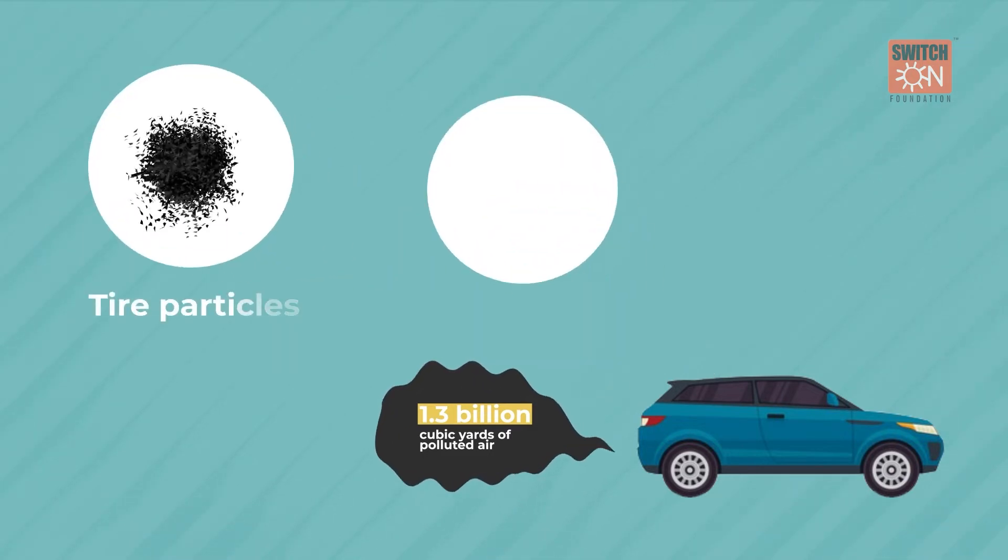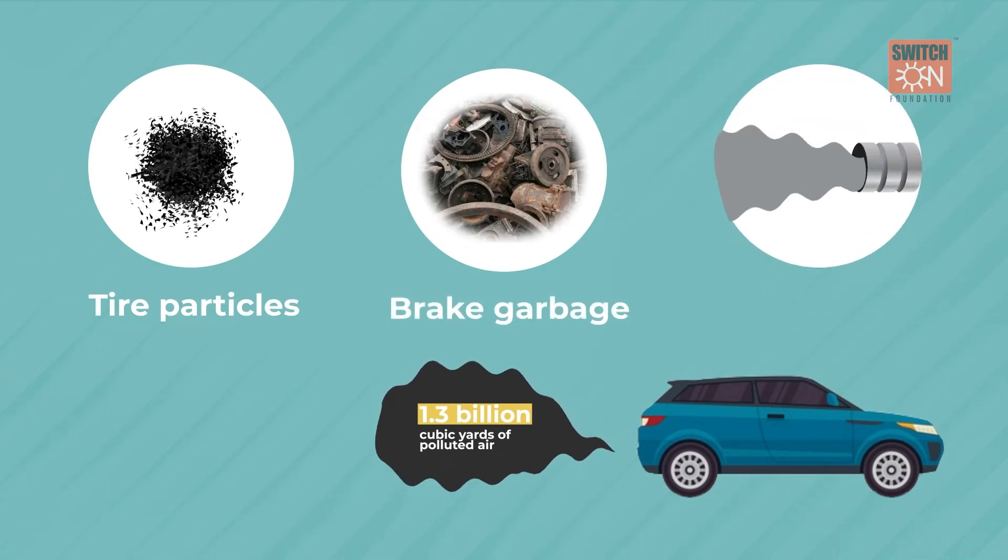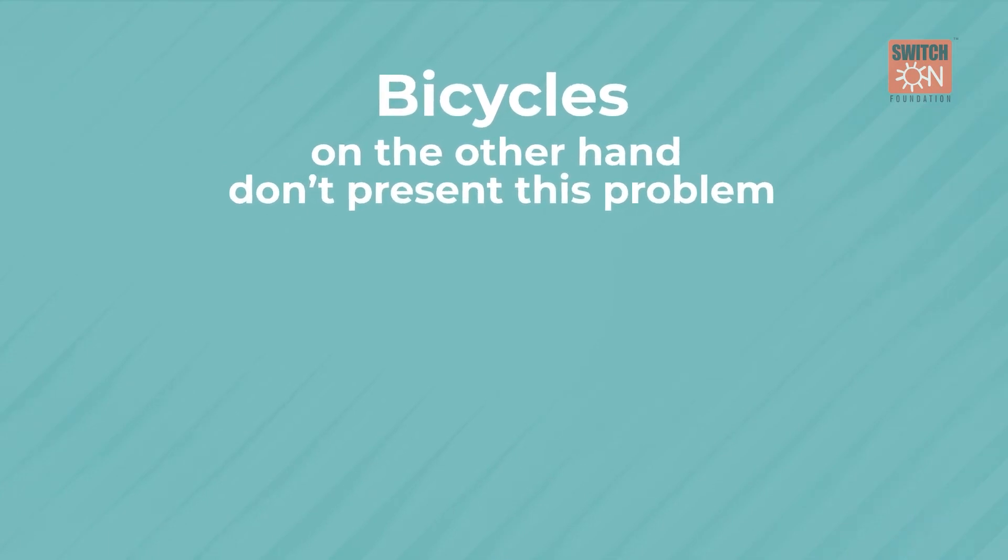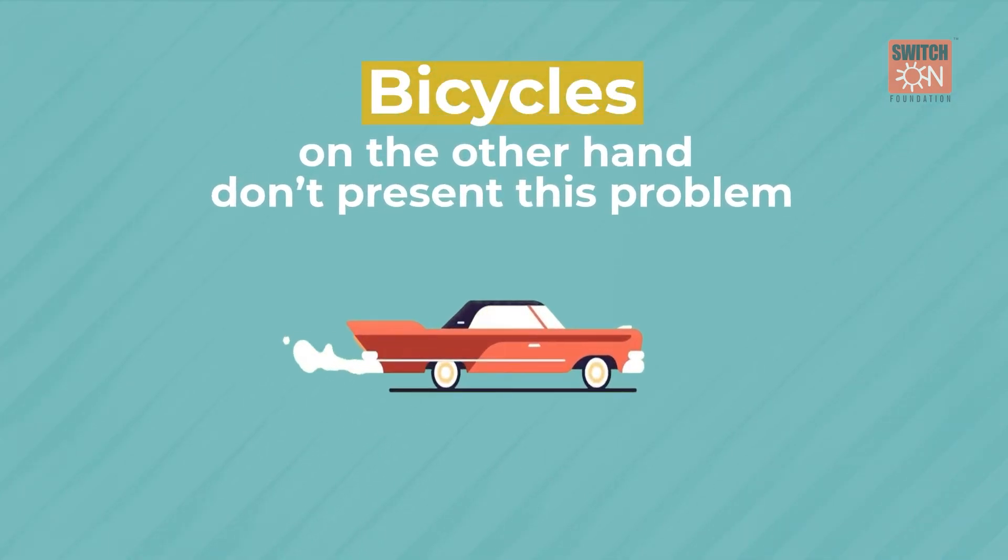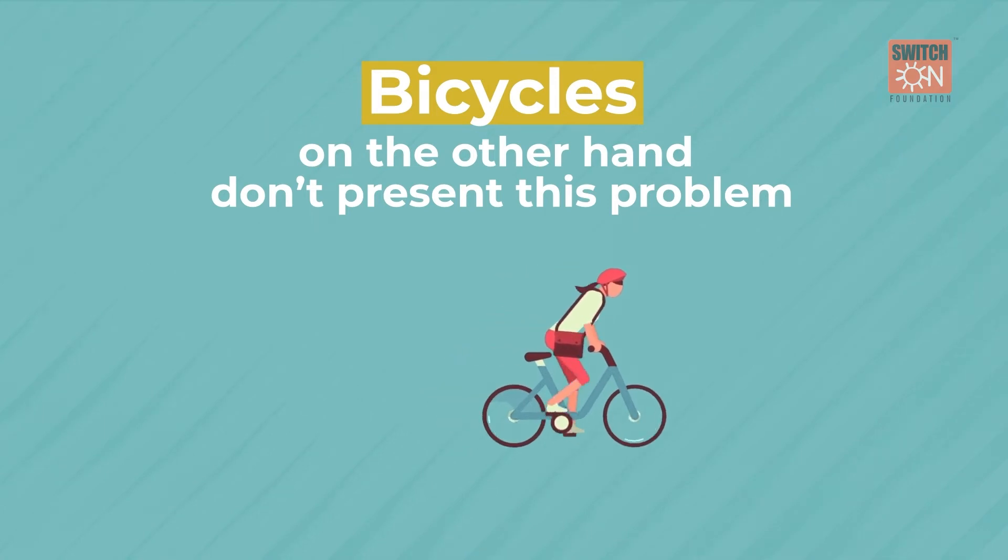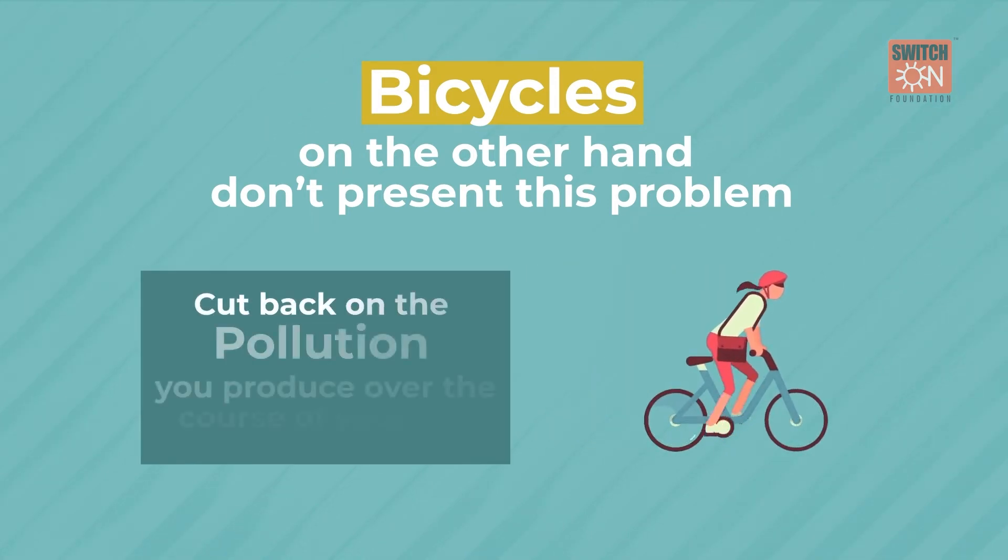Worn tire particles, brake garbage, and emissions from the plastic and other materials in the car also contribute to air pollution. Bicycles, on the other hand, don't present this problem, and opting to ride instead of drive is a very powerful way to cut back on the pollution you produce over the course of your day.